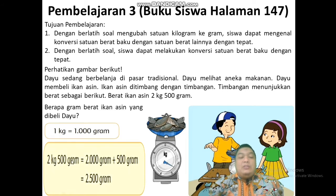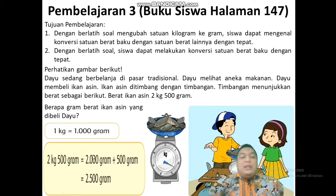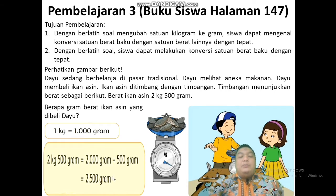2 kilo 500 gram, atau ditulisnya 2000 gram lebihnya 500 gram. Karena 1 kilo 1000 gram, maka 2 kilo berarti 2000 gram. Tinggal dijumlahkan saja: 2 kilo 500 gram sama dengan 2500 gram.